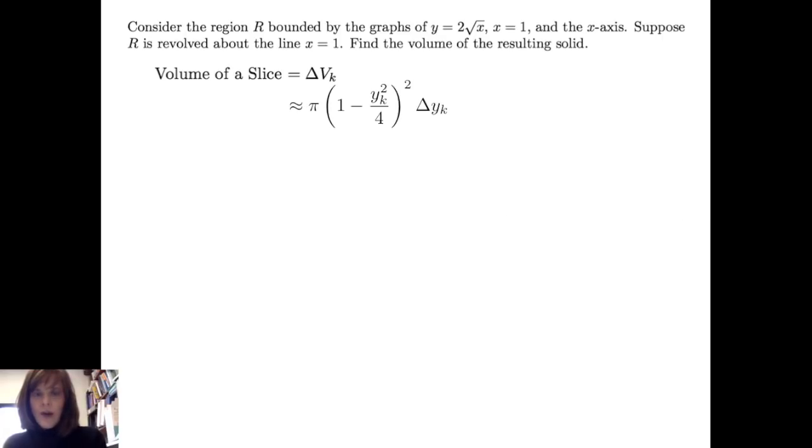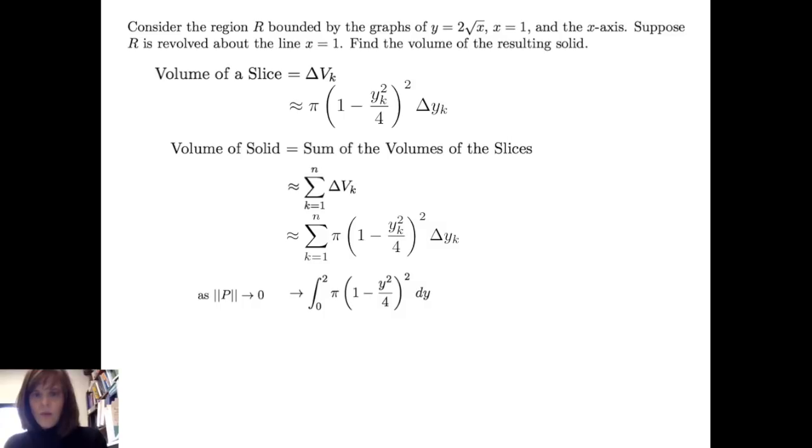I want to find the volume of the solid by summing the volumes of the slices. So I get the sum k going from 1 to n of ΔV_k. So I've got the sum k going from 1 to n of π times the quantity (1 - y_k²/4)² Δy_k. I take the limit of the Riemann sum as the norm of the partition goes to 0, giving us infinitely many very thin slices, which develops into the definite integral of π(1 - y²/4)² dy. And I take the integral from 0 to 2 because that's the interval that was partitioned along the y-axis.